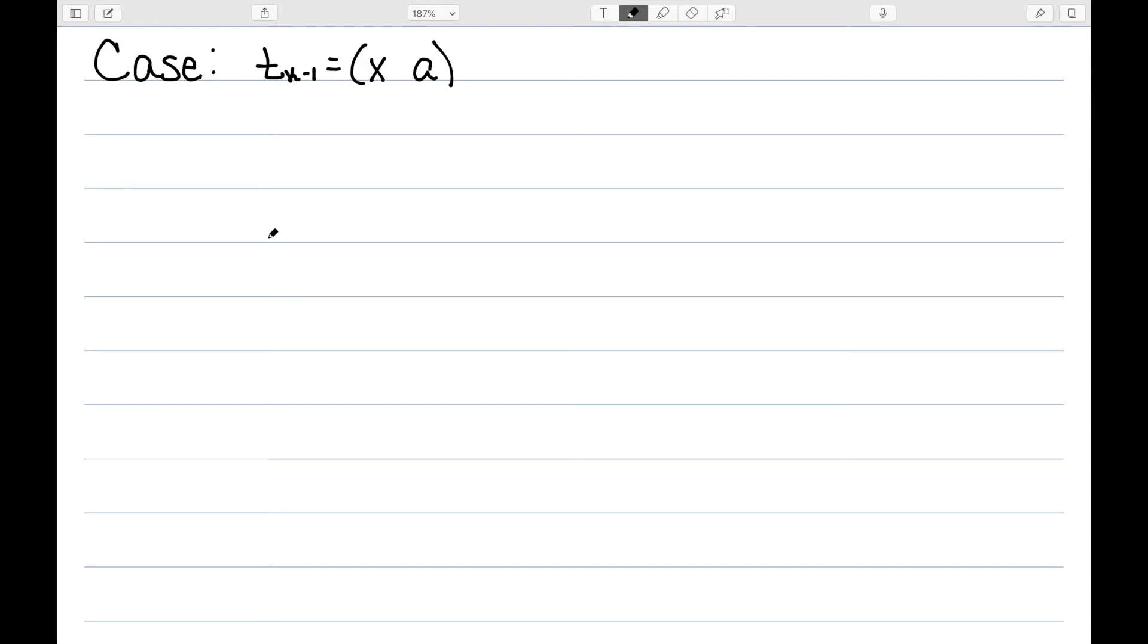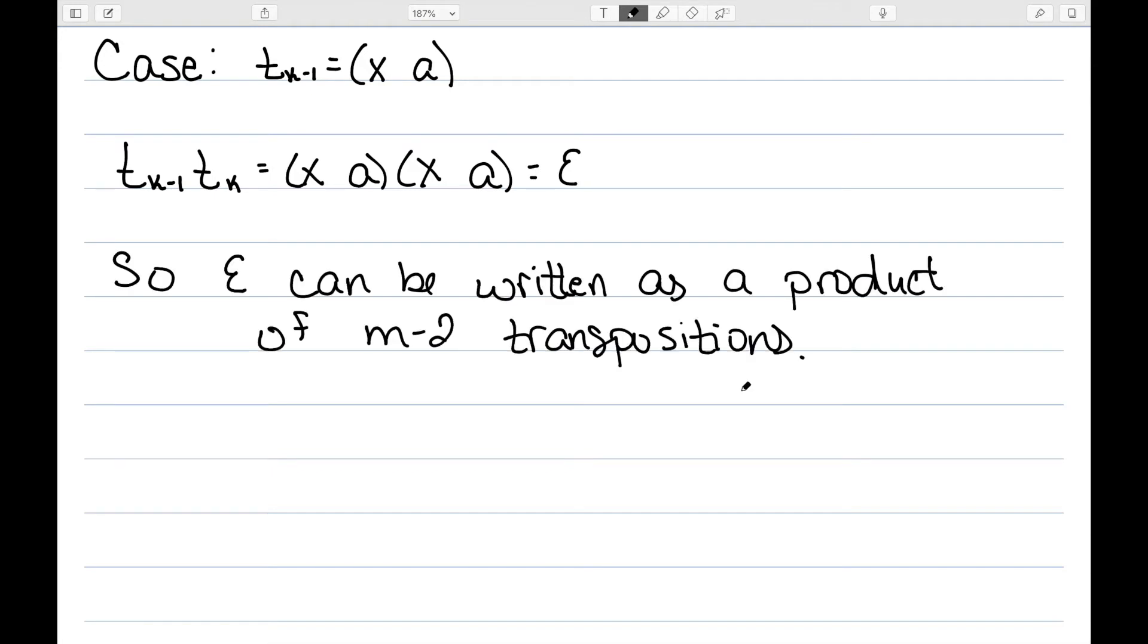Let's start by assuming tk-1 is equal to xa. We then have that tk-1 tk is going to be equal to xaxa, which is just the identity permutation. We then have that the identity can be written as a product of m-2 transpositions. I could just go ahead and cancel these two terms and remove two of my transpositions. And this works because if my identity could be written as an odd number of transpositions, then I could repeat these processes and slowly remove two transpositions until I would eventually get epsilon equal to a single transposition ab. And that's impossible since that would not be the identity element.